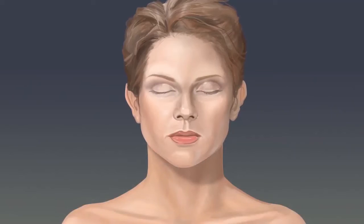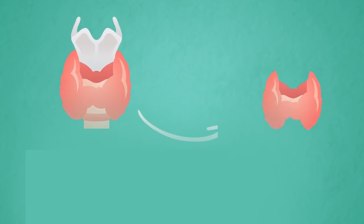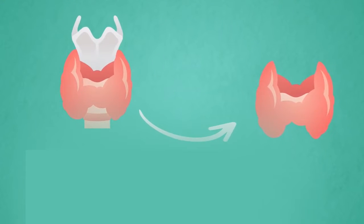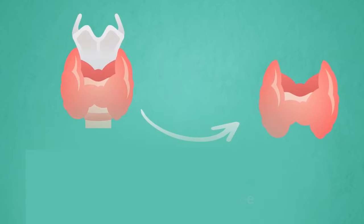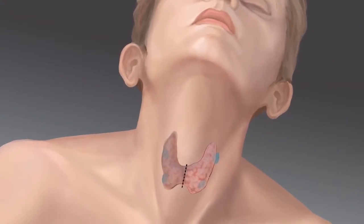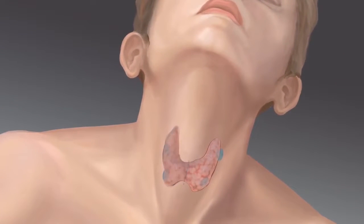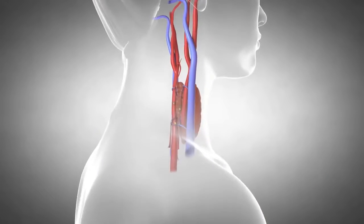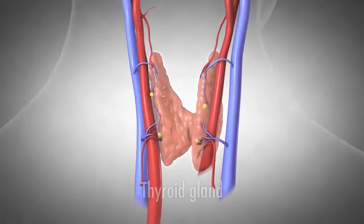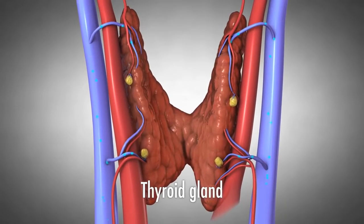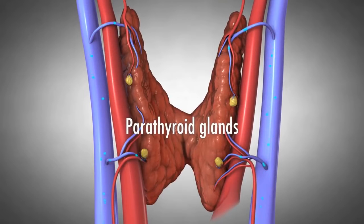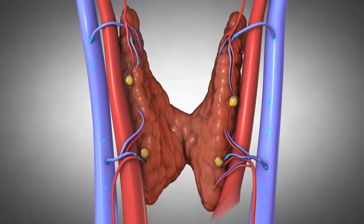The thyroid gland is located in front of our neck. We have only one thyroid gland and it is usually a butterfly or wedge-shaped gland. This gland has two lobes — the right lobe and the left lobe — and both lobes are connected with each other by a horizontal tissue called the isthmus. Now behind the thyroid gland we have small parathyroid glands, usually four in number, and these parathyroid glands play a very important role in balancing calcium in our body.